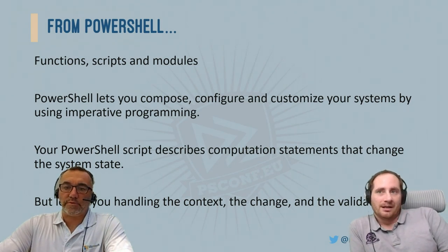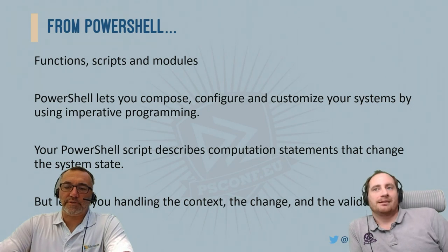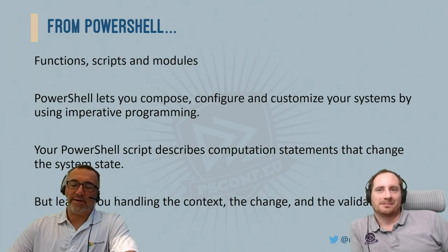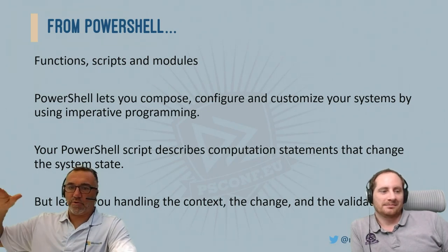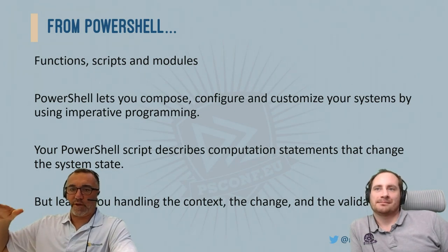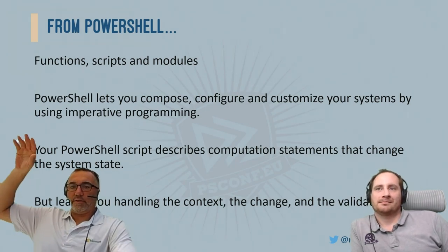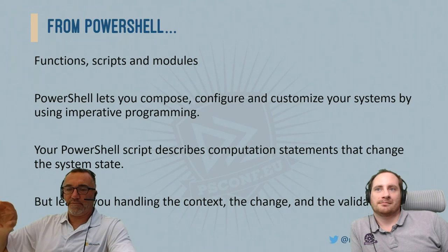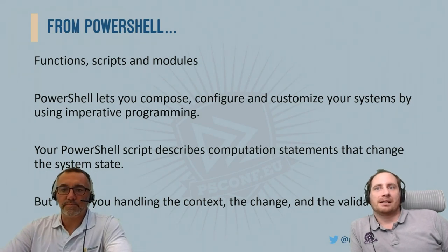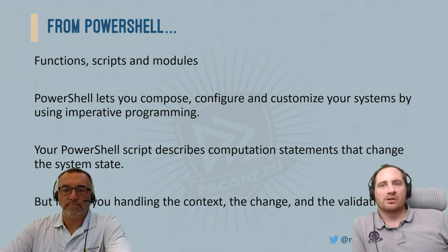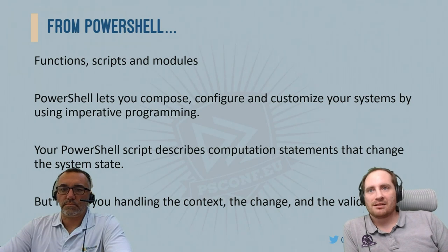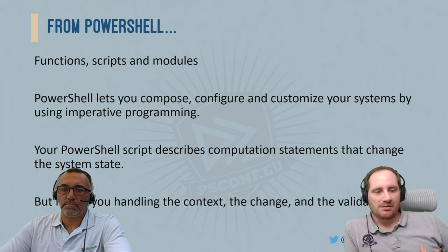The problem is that leaves you handling the context, the change, and the validation. If you want more abstraction, you need to abstract those commands into higher-level commands, which usually happens as script parameters. When an expert writes a big imperative script — line by line, with a structure the author came up with — it's not standardized across the team. They want to make it easy for somebody to manipulate it without changing code, so they take parameter input and feed that into variables in the scripts.